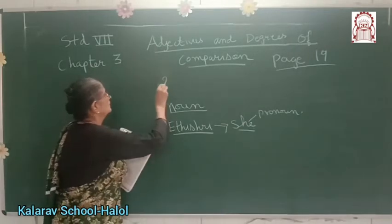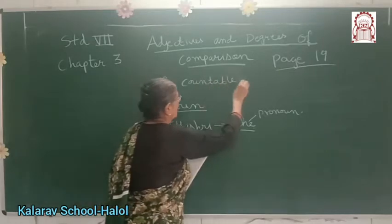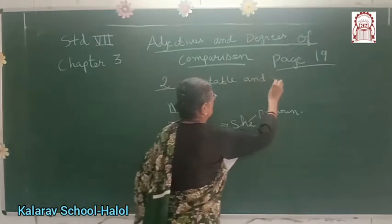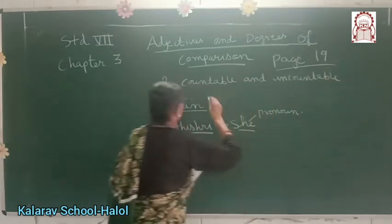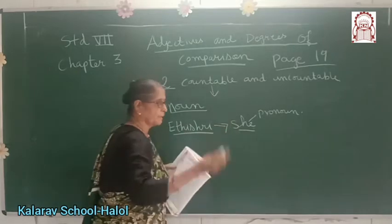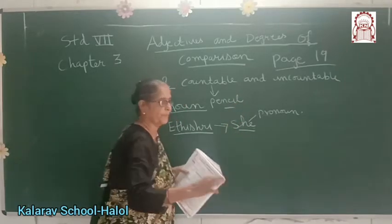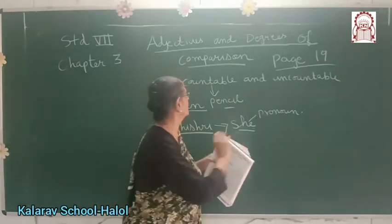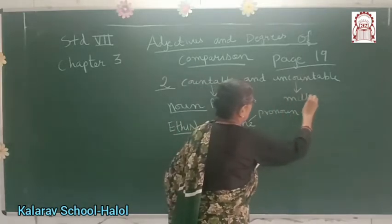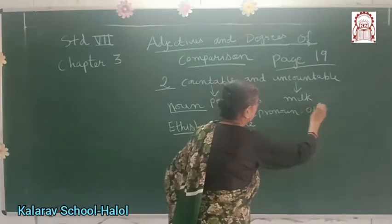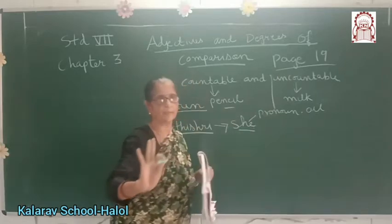Now nouns are of two types: countable and uncountable. Countable nouns are ones we can count — for example, pencil: one pencil, two pencils. More than one are plural and we can count them. Uncountable nouns — for example, milk, oil — we can't say one oil or one milk. So these are uncountable and cannot be counted.